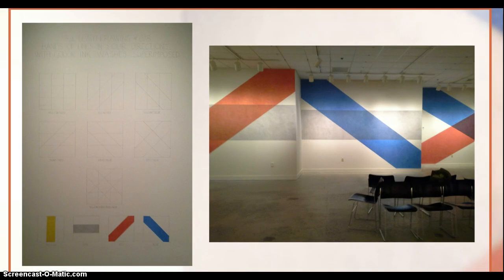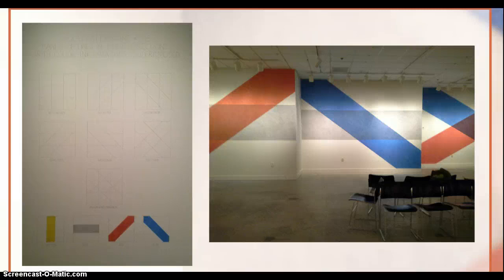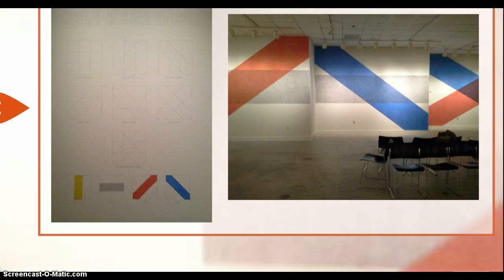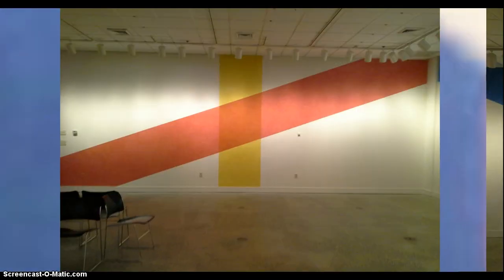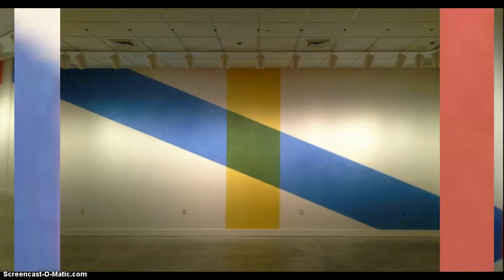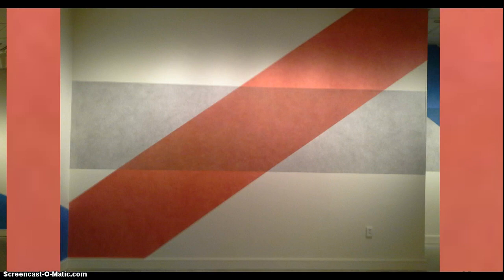Wall drawing number 618 consists of four wide bands, each a different color, each running in a specific direction. These were applied directly to the wall with color ink washes, and on each wall these bands were arranged in a variety of ways, almost creating a type of mathematical equation. So you would have red band plus yellow band equals this combination, blue band plus yellow band equals this combination, and so forth all throughout the room.